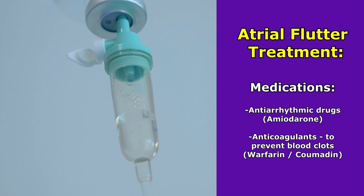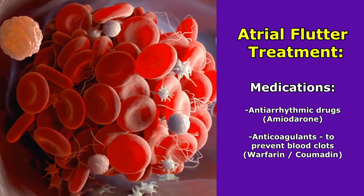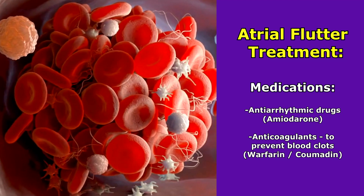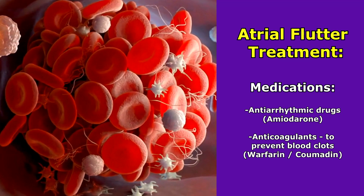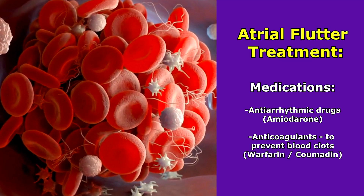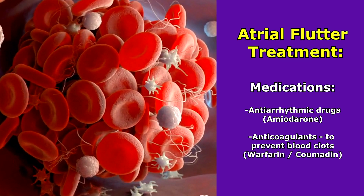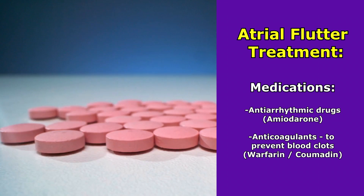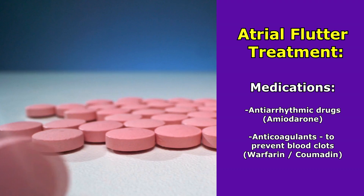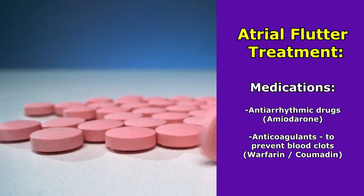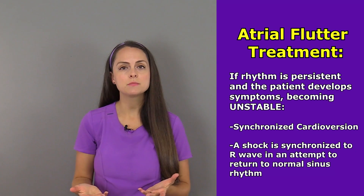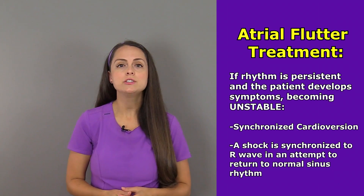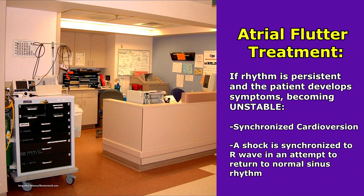One thing we really want to do with this rhythm is prevent a blood clot from forming, because those atria are not contracting as they should and blood can pool there. Whenever blood pools in the heart, it could lead to a blood clot. So the patient may be on anticoagulants, such as warfarin, also known as Coumadin, to help prevent this. If this rhythm is persistent and the patient starts to develop symptoms where they become unstable, we can do a synchronized cardioversion.